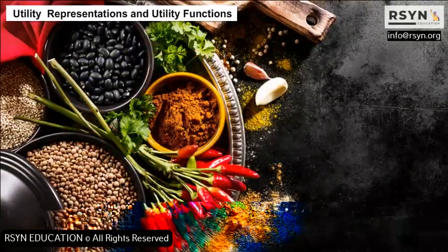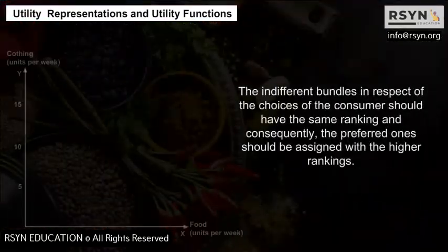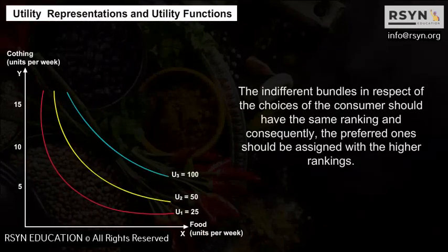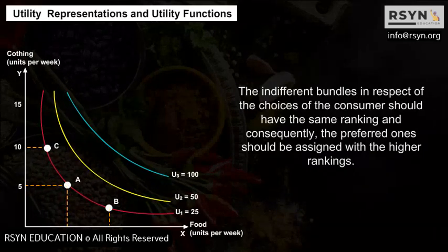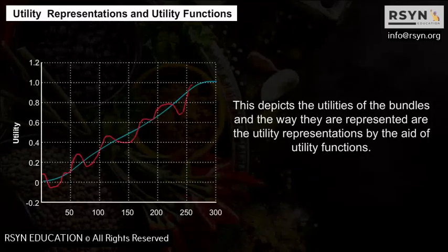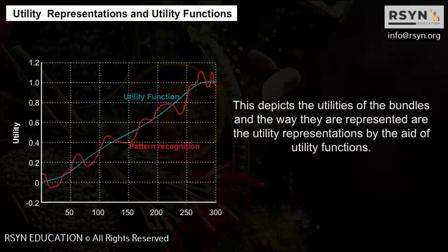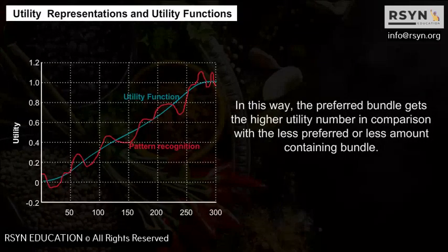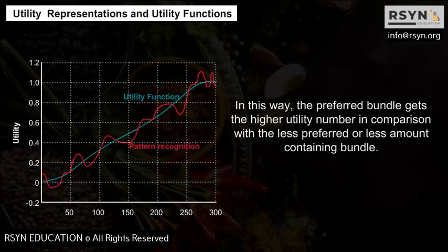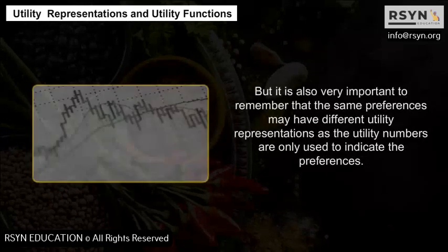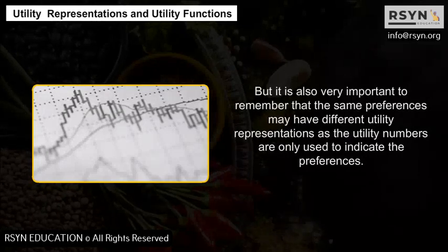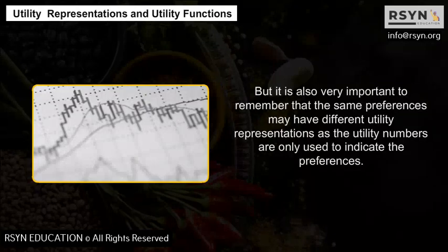Utility Representations and Utility Functions: Indifferent bundles with respect to the consumer's choices should have the same ranking, and the preferred ones should be assigned higher rankings. This depicts the utilities of the bundles, and the way they are represented is through utility representations using utility functions. The preferred bundle gets the higher utility number. It is important to remember that the same preferences may have different utility representations, as utility numbers are only used to indicate preferences.